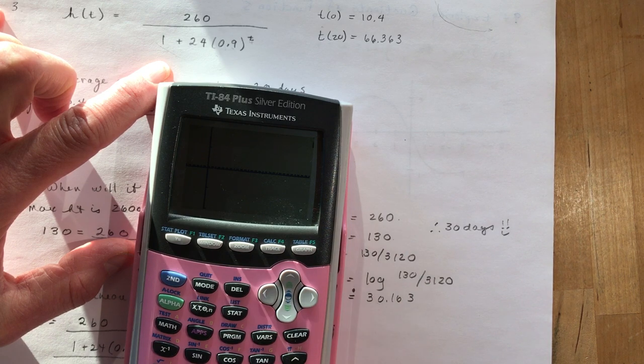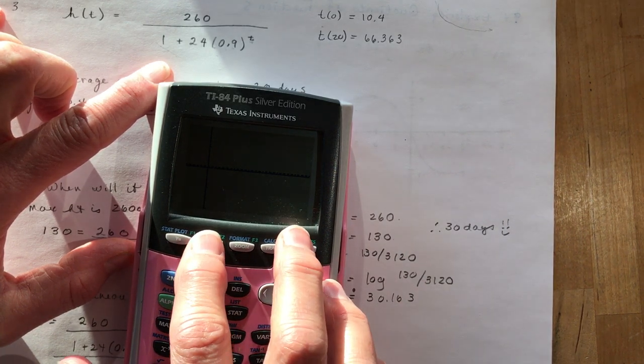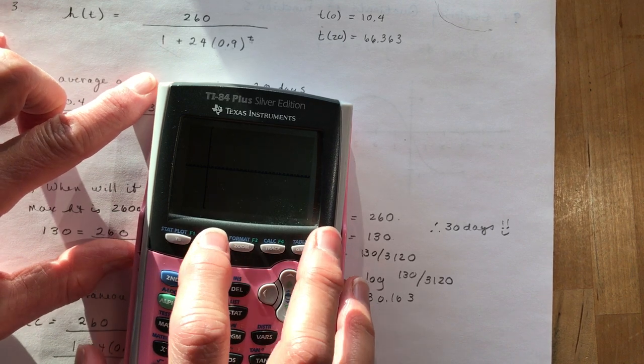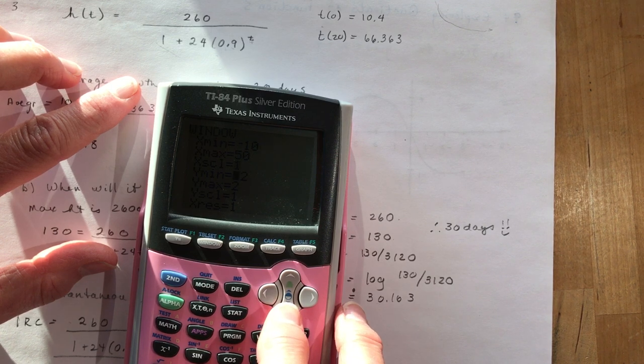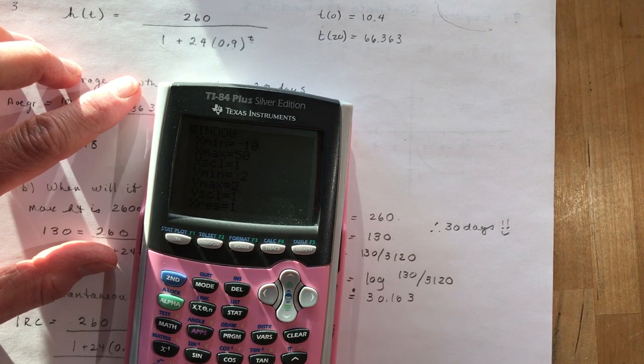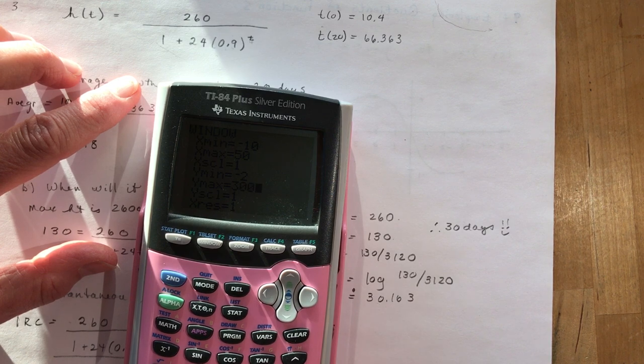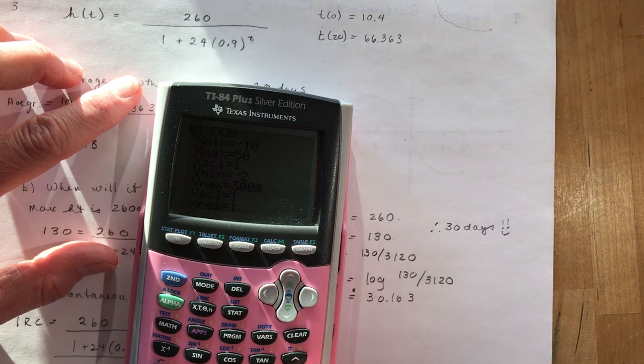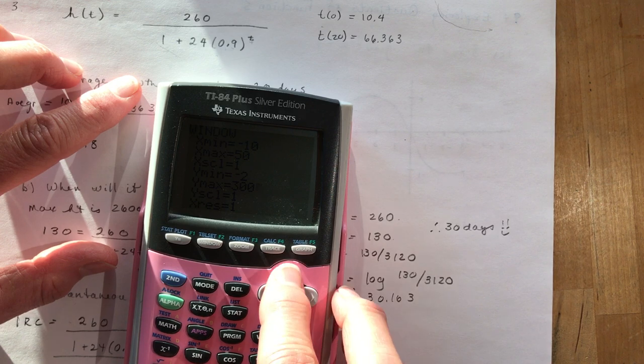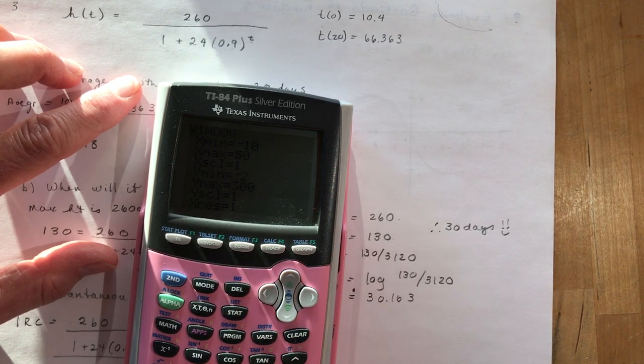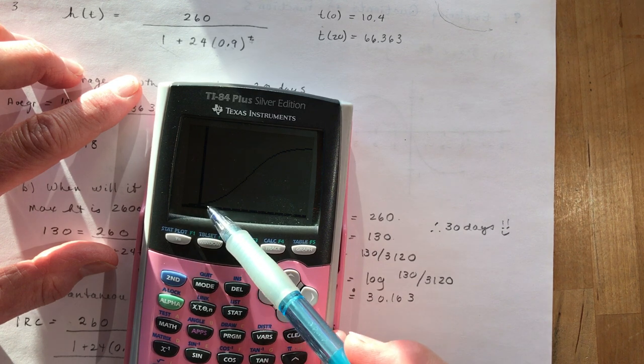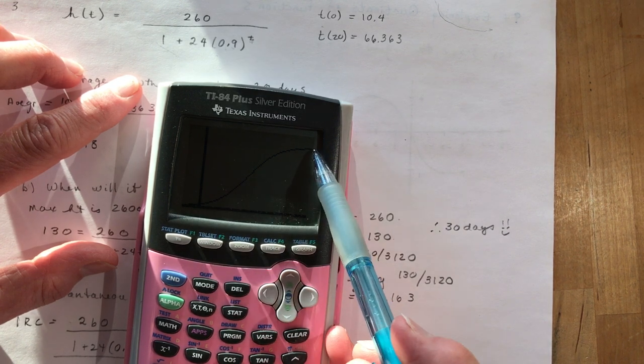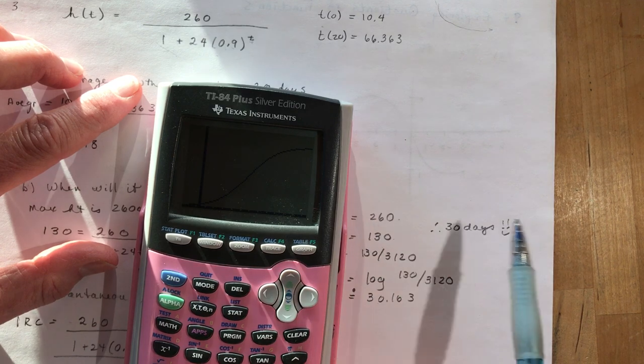And I'm going to graph it. Oh, really bad window. So what did we have? We had 260, so we need to go to a maximum height of, let's say, 300. And how many days? So we were out 30 days was half, so let's go 70 days. Let's take a look at the graph now. Okay, so there you can see as we go off in time here, this is starting to flatten out.